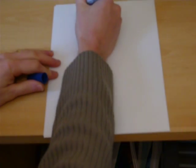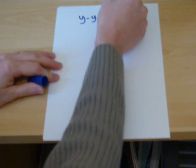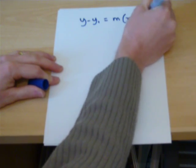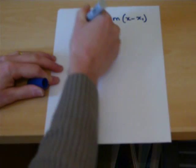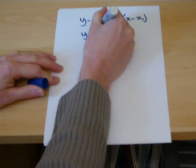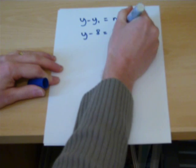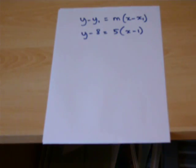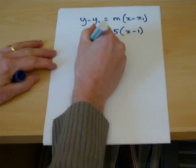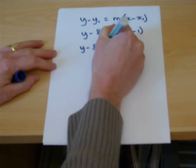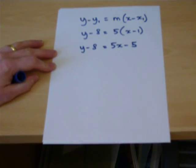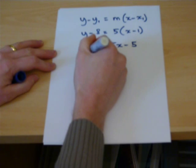So, y minus y1 equals m times x minus x1. Substituting in, y minus 8 equals 5 times x minus 1. These are the numbers we found on the previous page. We expand and rearrange by adding 8 across to both sides.